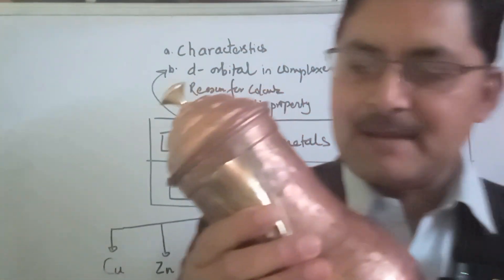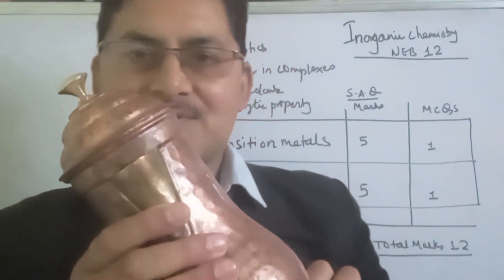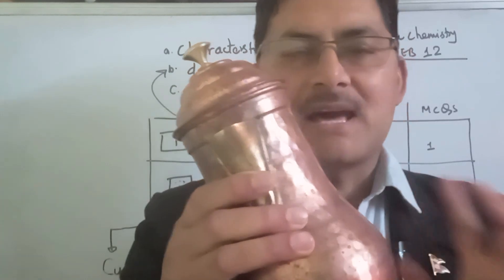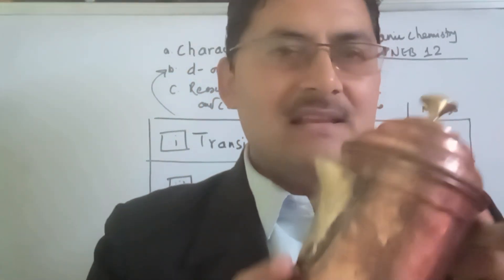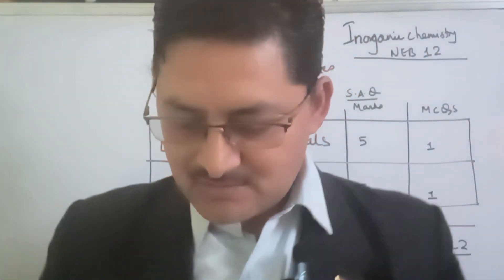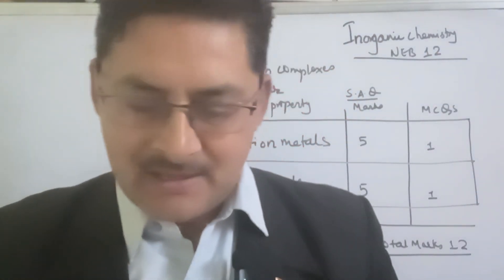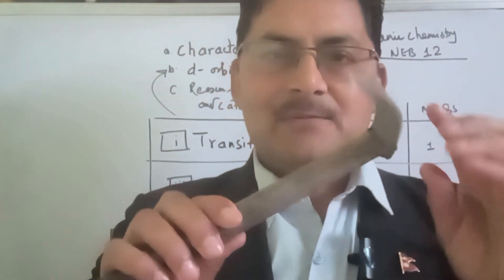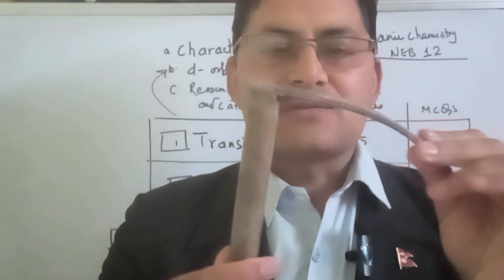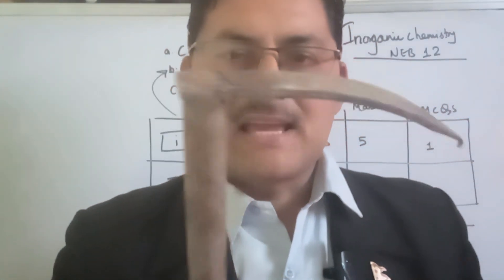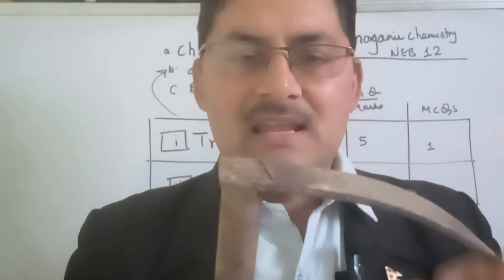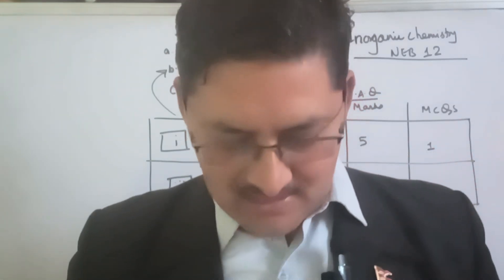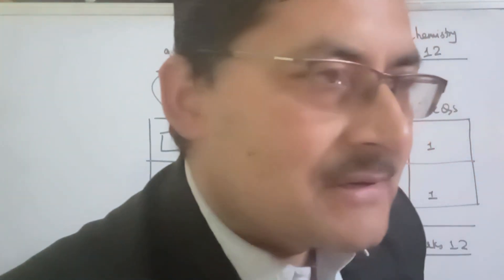We will cover copper — used in electric cable wires — as well as iron (Falaam) and silver.